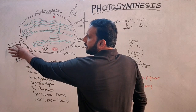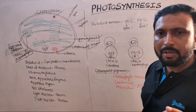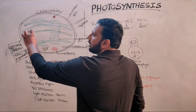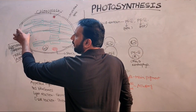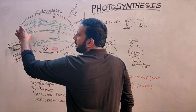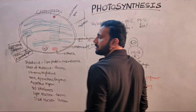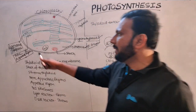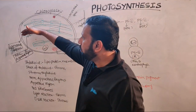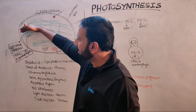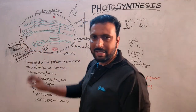Important terms: non-appressed regions and appressed regions. Non-appressed regions means the margins or ends of the grana. Appressed regions are where one thylakoid is in contact with another thylakoid.